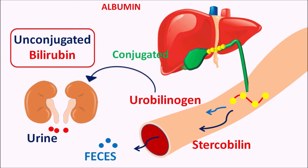Liver disorders such as hepatitis, liver cirrhosis, or severe alcoholism, gallbladder disorders causing obstruction, or any renal failure — all these conditions may elevate bilirubin levels, resulting in various symptoms resembling jaundice.